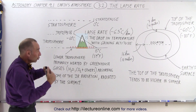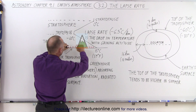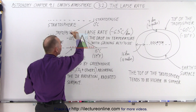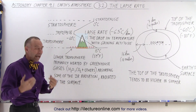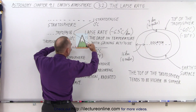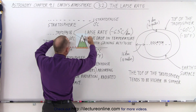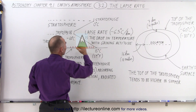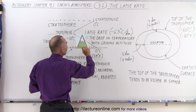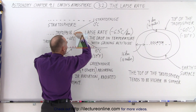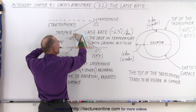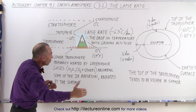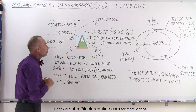If that energy couldn't go anywhere and stayed in the lower troposphere, it would heat up enormously and just above it would be icy cold — we wouldn't see this gradual change in temperature. What we see happening is that this heat slowly migrates higher and higher, and as it migrates upward it gets colder and colder, because it's very cold higher up — and that's what creates the temperature gradient we call the lapse rate.